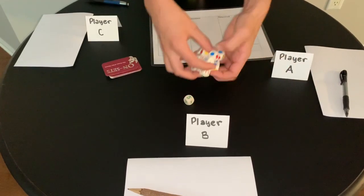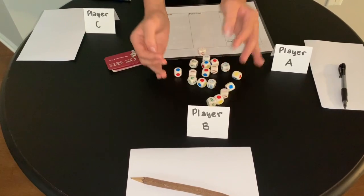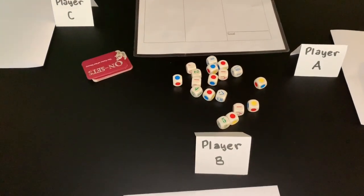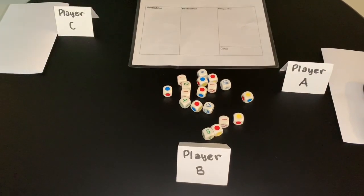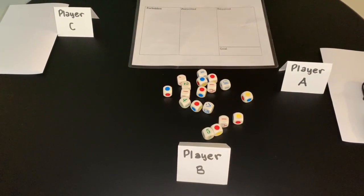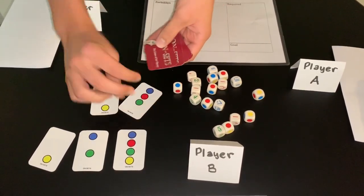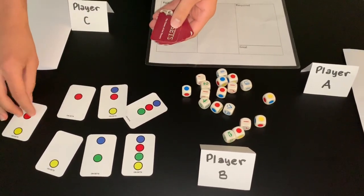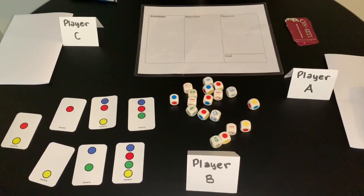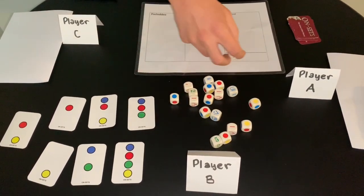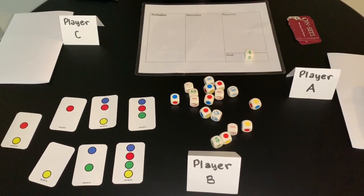Player B would take all the dice and would thoroughly roll them. The player to the right of Player B, Player A, is a universe setter. So Player A would shuffle the cards and draw seven cards. Player B's goal is going to be four. It's going to say goal set and the turns will begin.